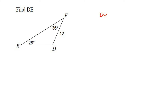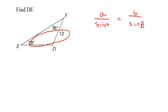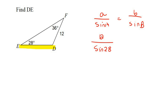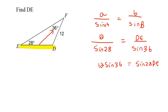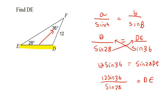Here are our next ones. Remember, we don't use SOH-CAH-TOA because it's not a 90 degree triangle. Let's look for the first opposite we see and fill that in. Now we're looking for DE, and that is opposite the 36. So we're going to say DE over sin 36. Cross multiplication — that goes there and that goes there. And so now to get DE by itself, you do that. So DE will be 15.02.